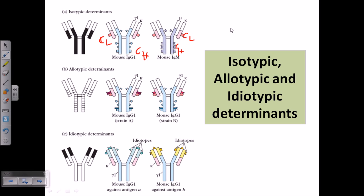If you take a mouse, for example, and take two immunoglobulins from the same mouse, both immunoglobulins will have variations in their variable regions — differences in amino acid sequences — but they will have a similar constant region of the light chain. This similar part is called the isotypic determinant. If you take the same species, you must find this similarity among all immunoglobulins of all members of that species. In humans, you can have variations in the CH region but not in the CL region.